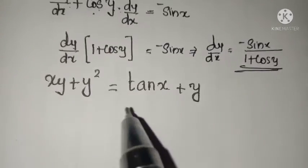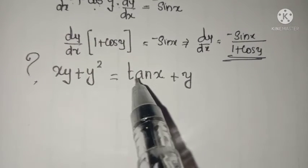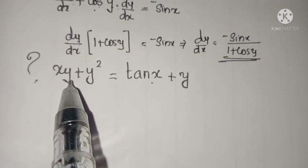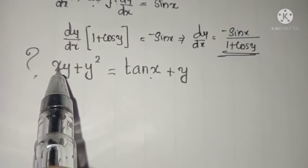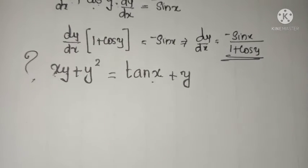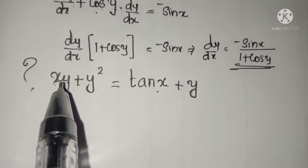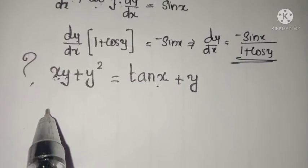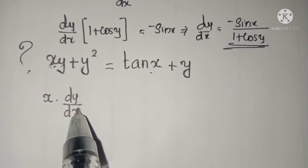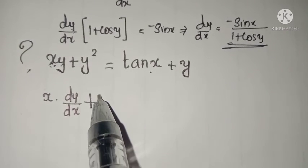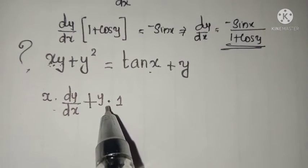Let's see another question: xy plus y squared equals tan x plus y. Differentiate with respect to x. Here, xy means x into y, so we need to apply the product rule. Product rule: first function into derivative of second function, plus second function into derivative of first function.